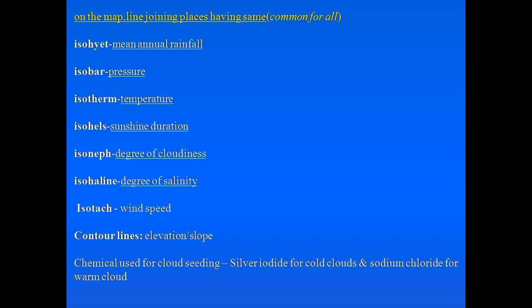Remember isotach for equal wind speed. For cloud seeding, the chemicals used are silver iodide for cold clouds and sodium chloride for warm clouds. These are the key topics for general agriculture purposes. If you like the video, please press the like button and subscribe to the channel Agri Science.